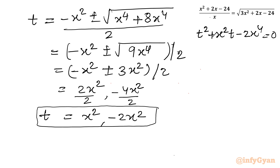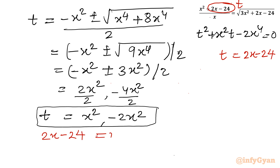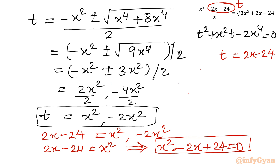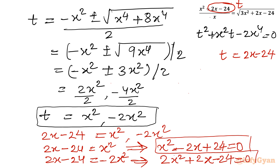Now let us put back the value of the substitution t. t was 2x - 24. So we write 2x - 24 = x² and 2x - 24 = -2x². Let us frame two quadratic equations. First: x² - 2x + 24 = 0. Second: 2x² + 2x - 24 = 0. We will solve both equations.